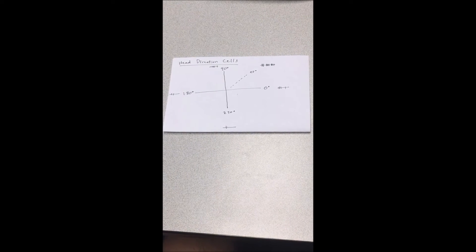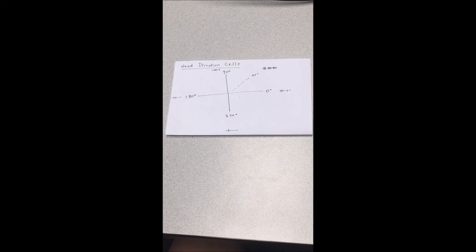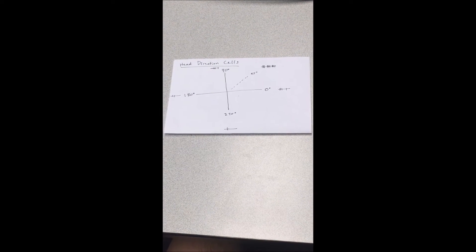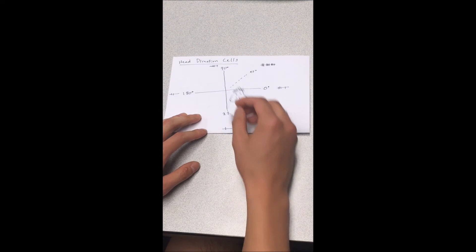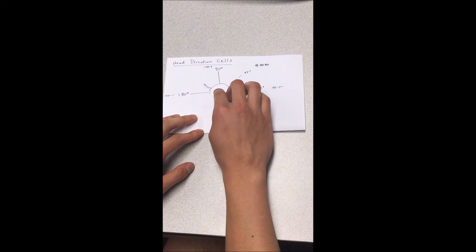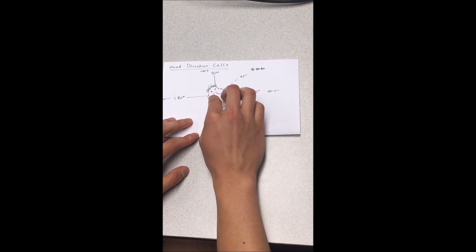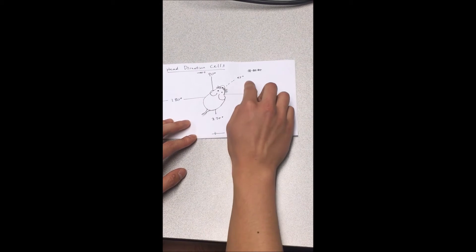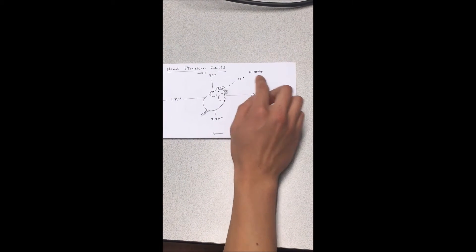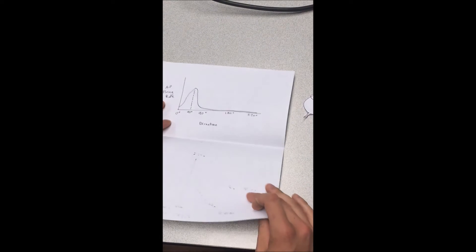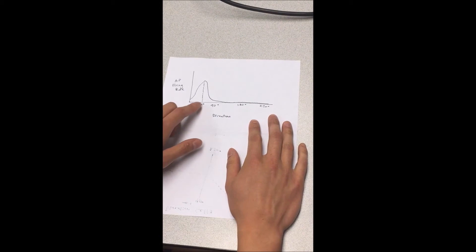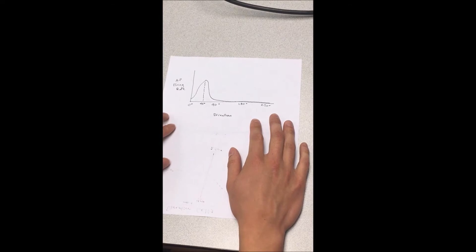The experiment that discovered head direction cells was conducted by changing the direction the head of each mouse was facing and observing the action potentials recorded at each direction. For example, one head directional cell might fire the most at 45 degrees. The corresponding graph would then look like this, with the peak of action potential firing at 45 degrees and falling off in other directions.